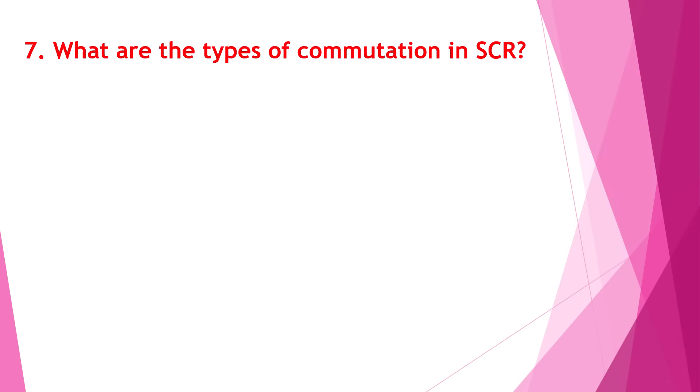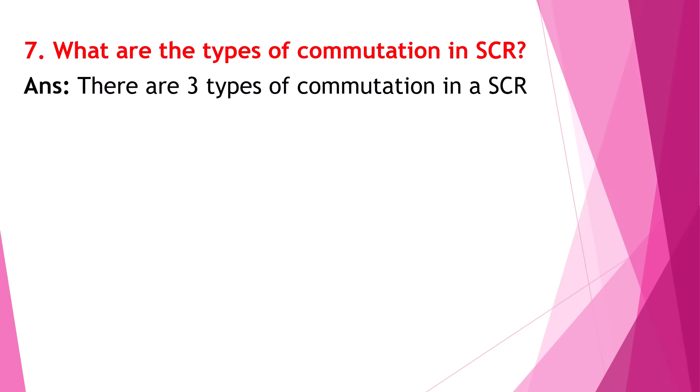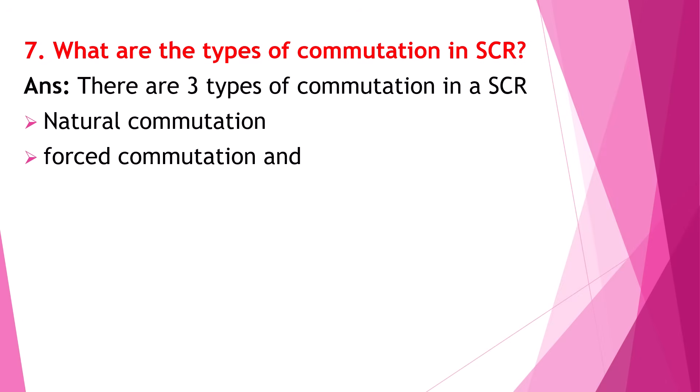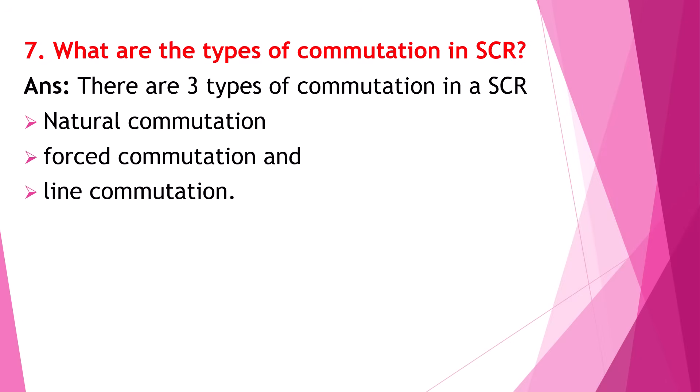What are the types of commutations in SCR? There are three types of commutations in an SCR: natural commutation, forced commutation, and line commutation.